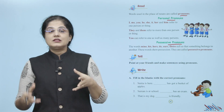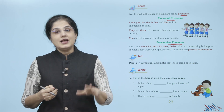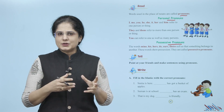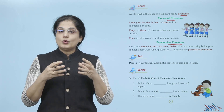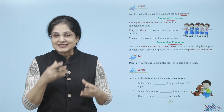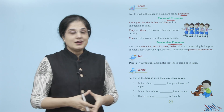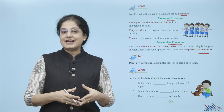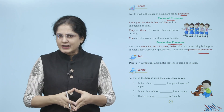Now let us look at possessive pronouns. The words mine, his, hers, its, ours, theirs tell us that something belongs to another. Yeh jo words hain — mine, his, hers, its, ours, theirs — yeh batate hain ki koi cheez kisko belong karti hai. So these words show possession and are called possessive pronouns.